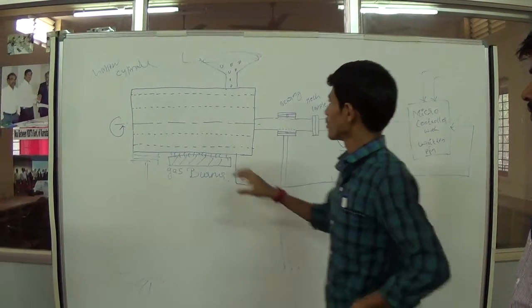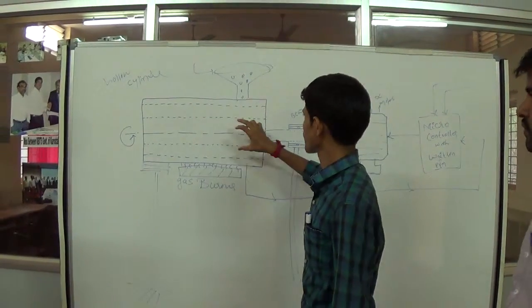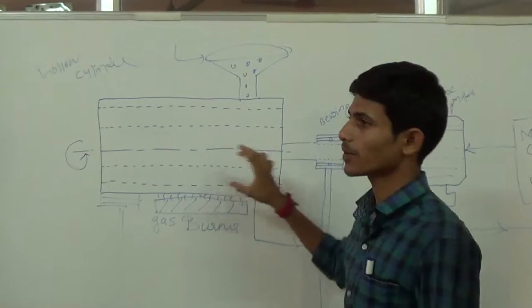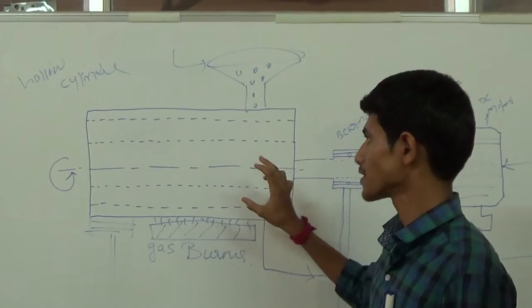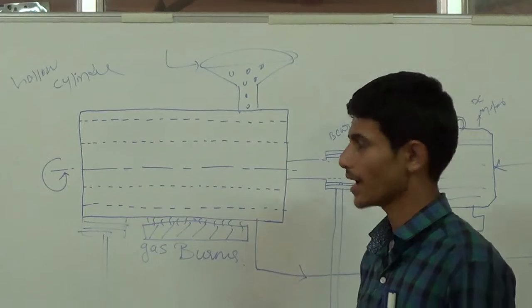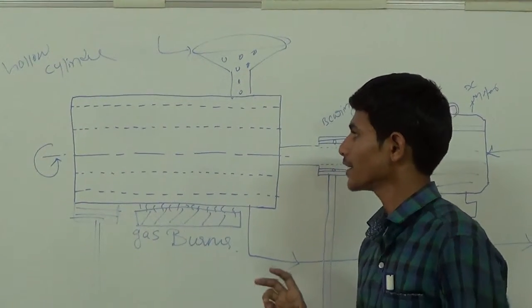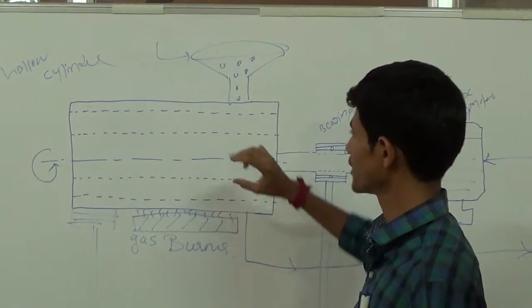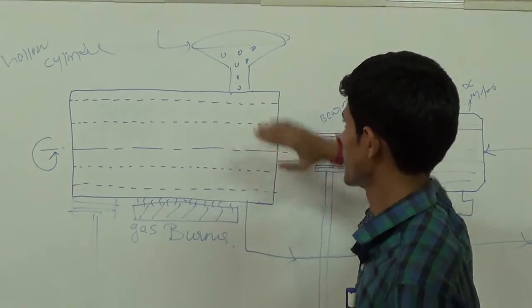Here we are using a hollow cylinder. This hollow cylinder is made up of stainless steel material. This stainless steel material has high specific heat and it is internally fitted with some longitudinal blades.